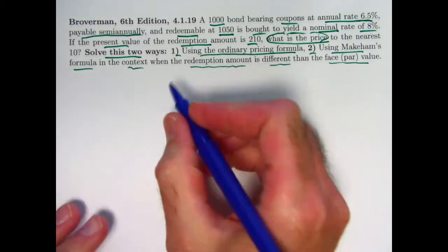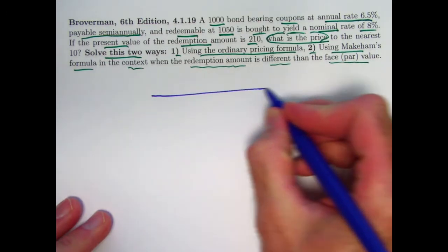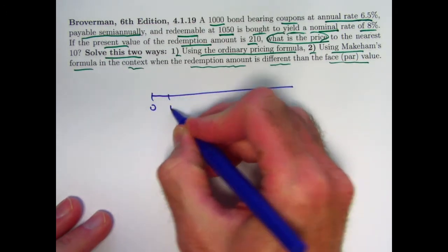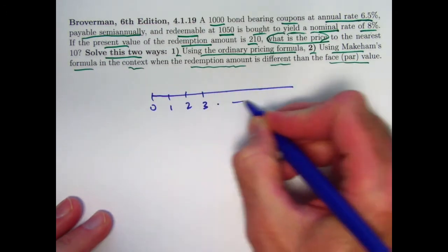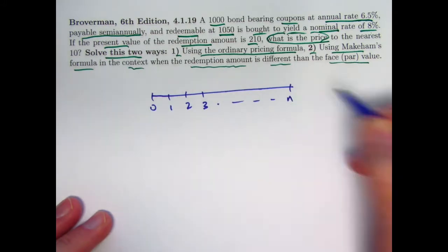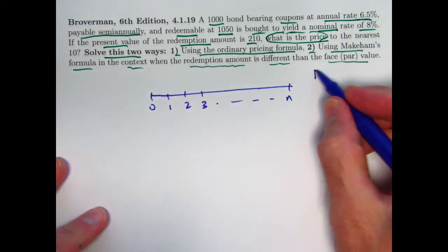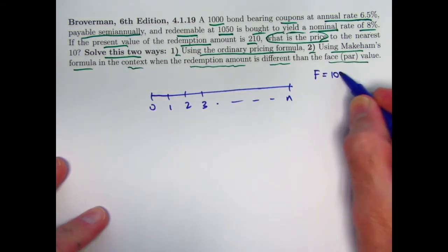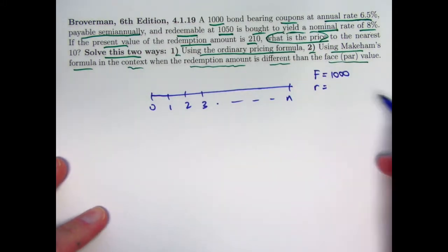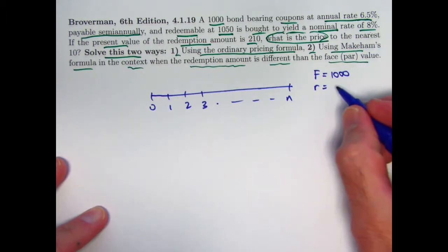Let's first solve it in the ordinary way, with the ordinary pricing formula, based on thinking about a timeline. These periods would be half years. There's N of them. We don't know what N is, but we can solve the problem anyway. The face value is 1,000. R, the coupon rate, is 3.25%.